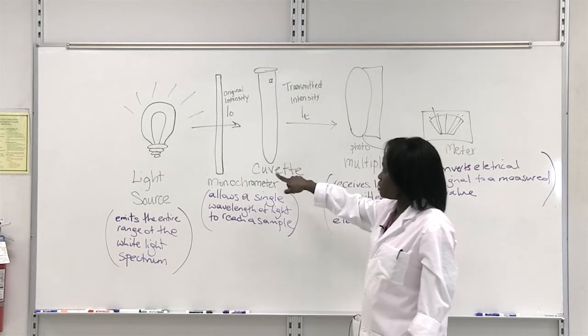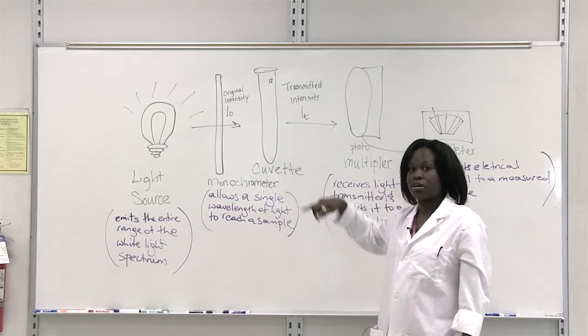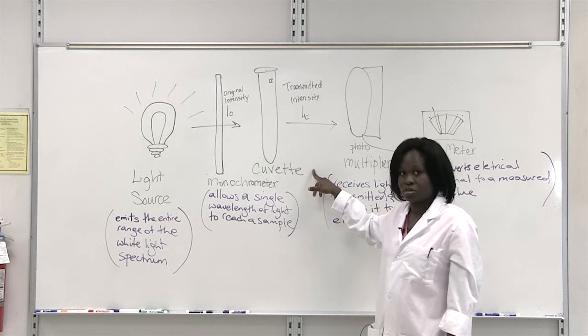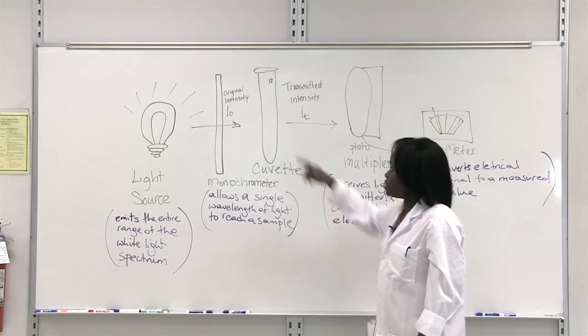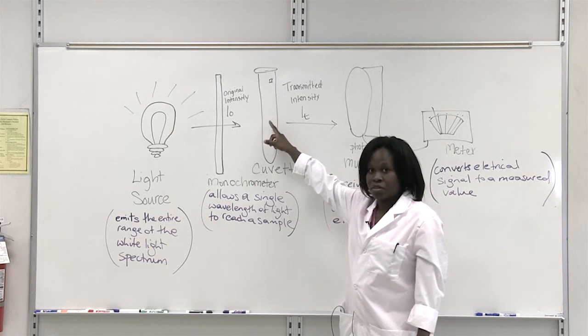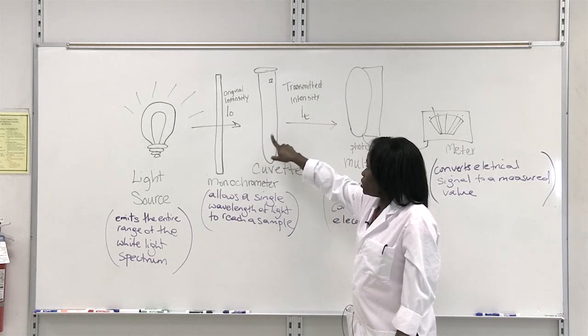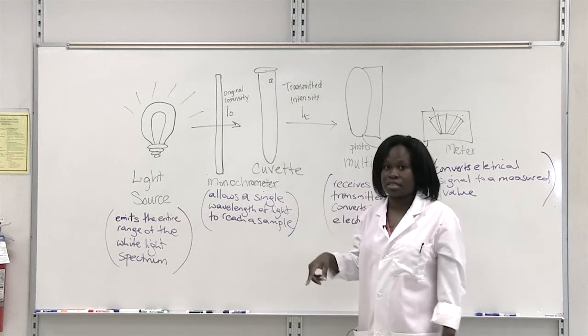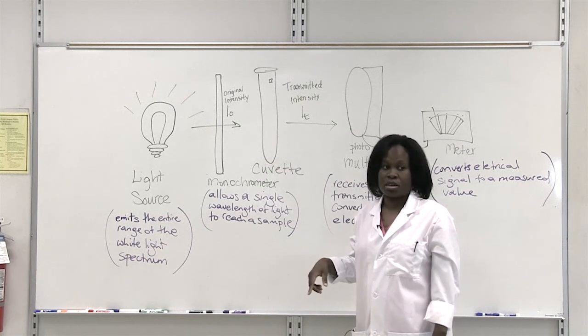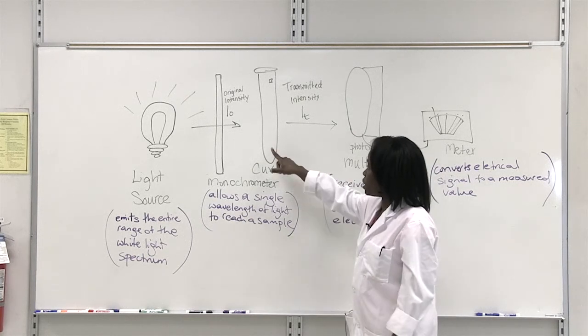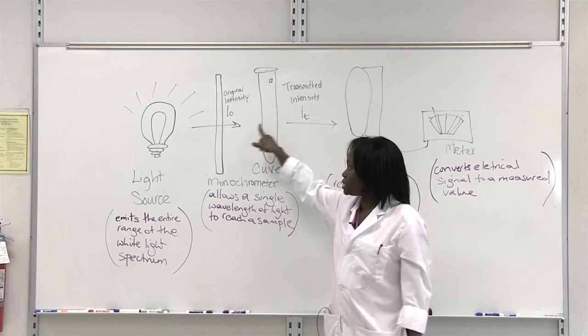So this represents either a cuvette or a test tube. In your lab you're probably going to be using a test tube, and the test tube is going to have your sample of interest. So the light is going to pass and hit your sample. And the sample, if it contains a food dye, it will absorb some of the light that is transmitted to it.